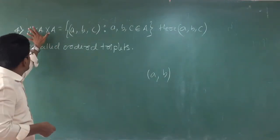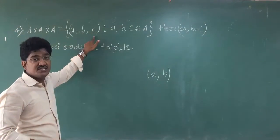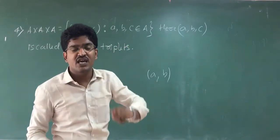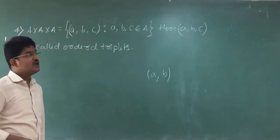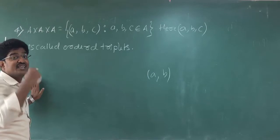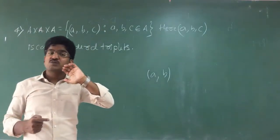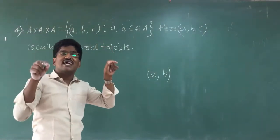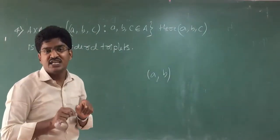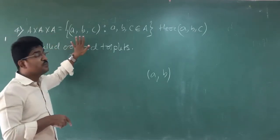So A cross A gives ordered pairs; A cross A cross A gives ordered triplets. The conclusion is: A cross A cross A equals the set of ordered triplets (a, b, c) where a, b, c all belong to set A. If I solve one example, this will be very simple for you.